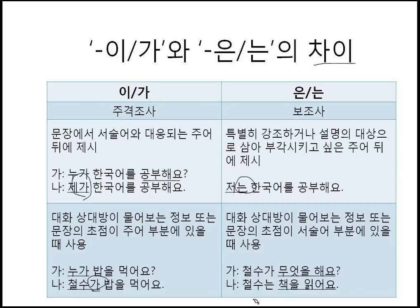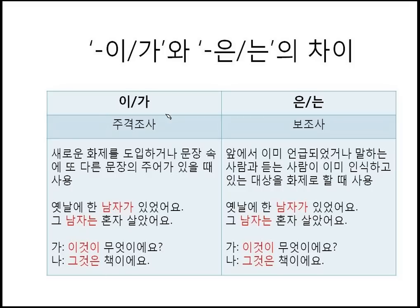철수가 무엇을 해요? 철수는 책을 읽어요. What is 철수 doing? The information the questioner wants to know is in the predicate part of the sentence. In that case, 는 is used — the focus is on the predicate part. 철수가 무엇을 해요? 철수는 책을 읽어요.